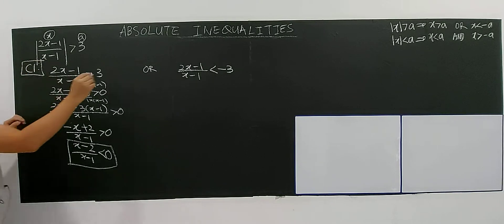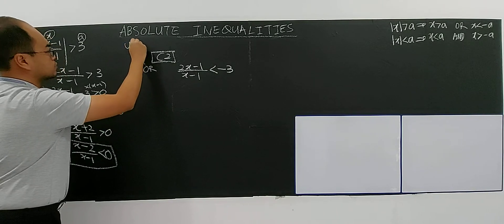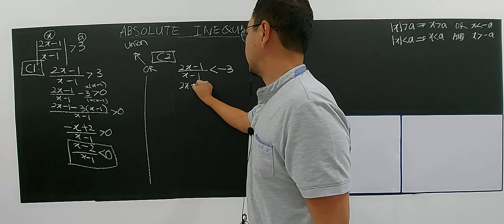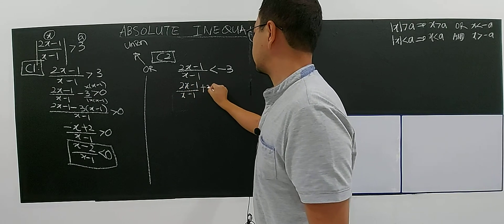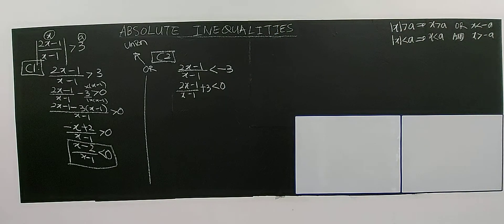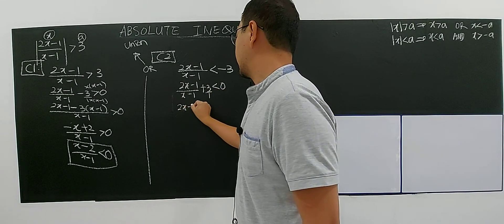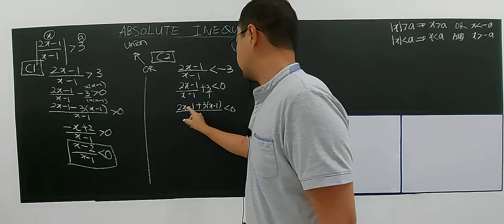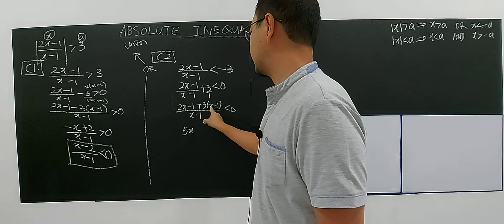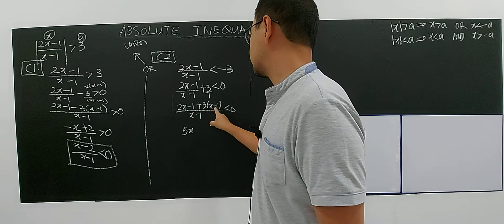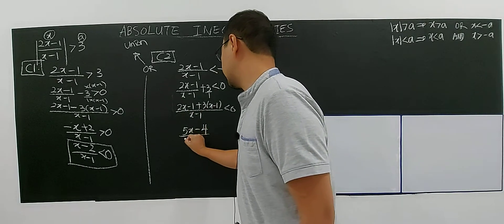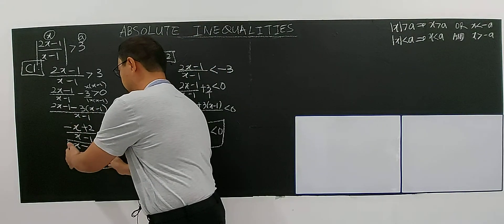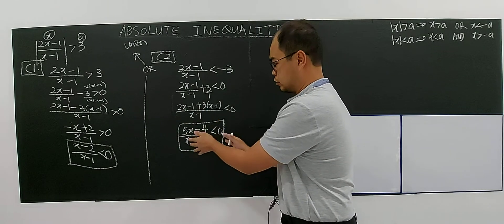Now for case two: (2x minus 1)/(x minus 1) plus 3 less than zero. Equating denominators by multiplying 3 by (x minus 1), you get: [2x minus 1 plus 3(x minus 1)] divided by (x minus 1) less than zero. Simplifying: 2x plus 3x is 5x; minus 1 minus 3 gives negative 4. So case two gives (5x minus 4)/(x minus 1) less than zero. Find the solutions for case one and case two separately using the table of signs.